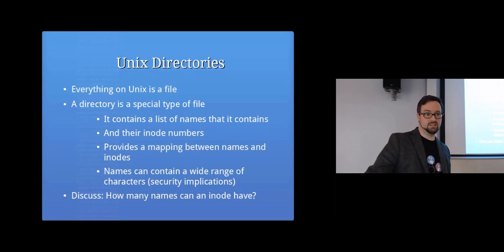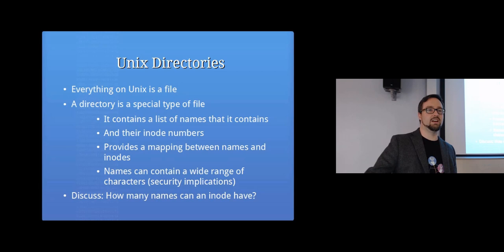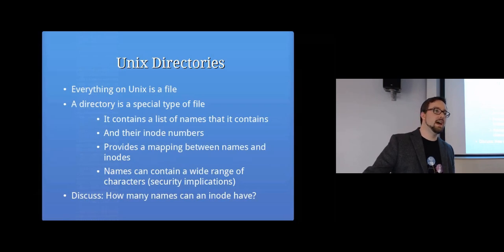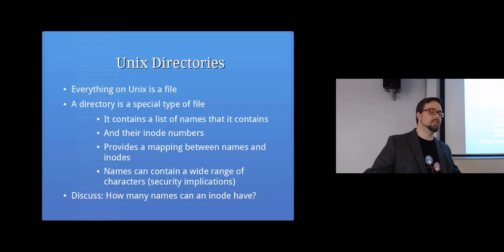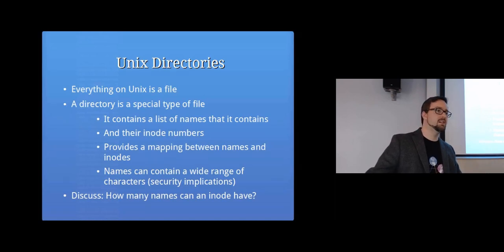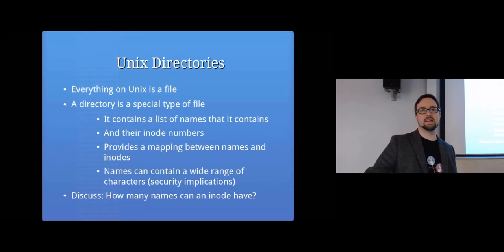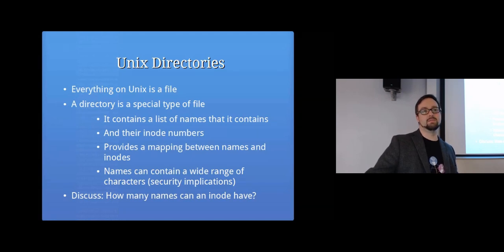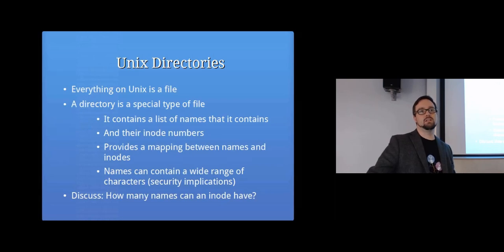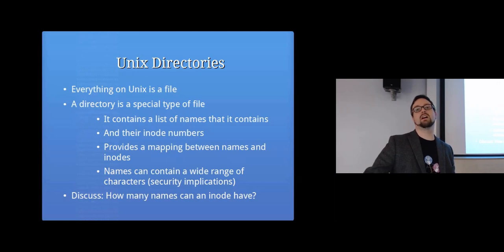Because names are just stored in directories, you can have multiple names for the same inode. On a Unix system, if you had a hundred directories, each of them could contain one or more filenames that all point back to the same inode number — meaning you can have multiple filenames for the same actual file on disk.